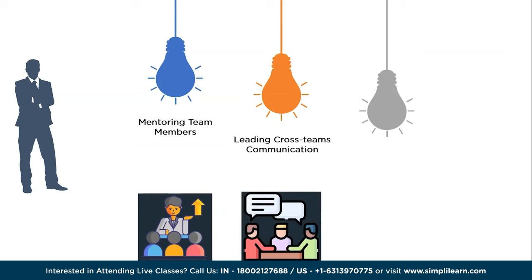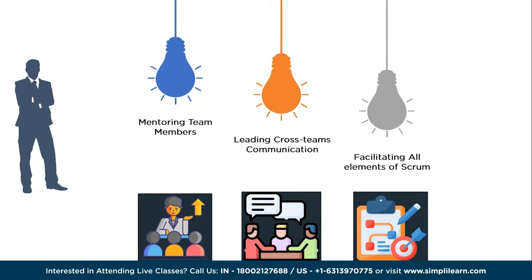Sixth is leading cross-team communication — the scrum master facilitates collaboration between different teams, ensuring alignment, coordination, and knowledge sharing across the organization. Seventh is facilitating all elements of the scrum framework including planning, sprint reviews, retrospectives, and other ceremonies. By fulfilling these roles, the scrum master empowers the team to work efficiently, overcome challenges, and deliver high-quality products while fostering continuous improvement and collaboration.